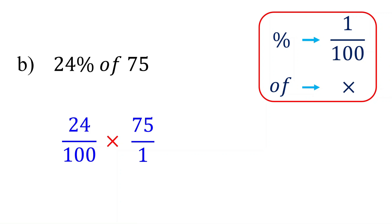Next, simplify the fractions. 75 and 100 have a common factor of 25. So 75 divided by 25 is 3, and 100 divided by 25 is 4. 24 and 4 have a common factor of 4. So 24 divided by 4 is 6, and 4 divided by 4 is 1.